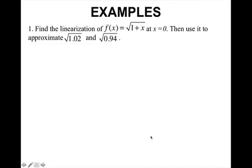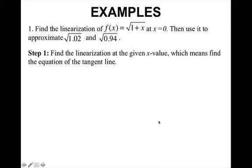So let's look at an example. We want to find the linearization of f(x) equals the square root of 1 plus x at x equals 0. Then use it to approximate the square root of 1.02 and the square root of 0.94. So the first step is to find the linearization at the given x value, which means find the equation of the tangent line.